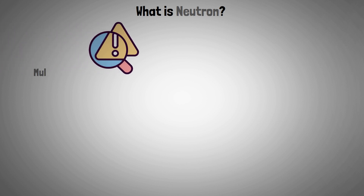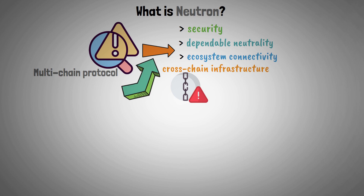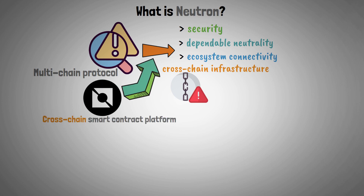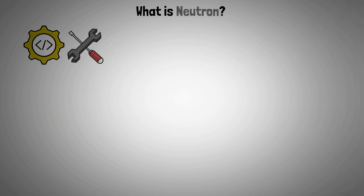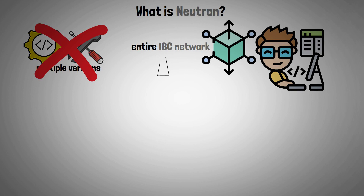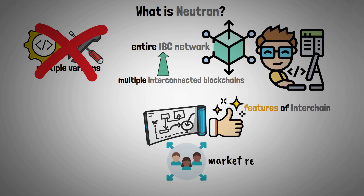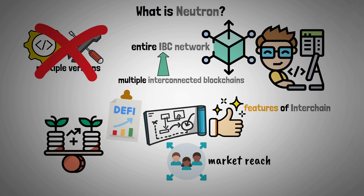The primary issues that multi-chain protocol centers confront — such as security, dependable neutrality, ecosystem connectivity, and constraints in cross-chain infrastructure — are all addressed by Neutron, a cross-chain smart contract platform. Without having to deploy or maintain multiple custom protocol versions, Neutron allows developers to deploy apps once and scale across the entire IBC network, which is made up of multiple interconnected blockchains. Neutron enables projects to take advantage of all the features of inter-chain, expand their market reach, and give DeFi applications access to the complete financial stability of the Cosmos Hub.